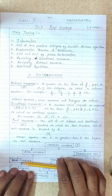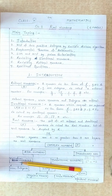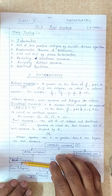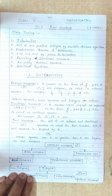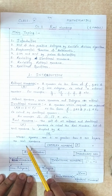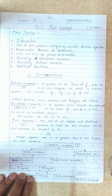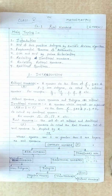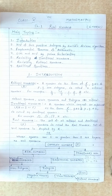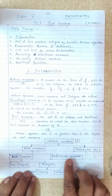Real numbers are denoted by capital R. All the numbers we have studied — rational, irrational — are real numbers, which we will study in this chapter. We can also classify numbers: the broadest category is complex numbers, denoted by C, divided into real numbers and imaginary numbers.